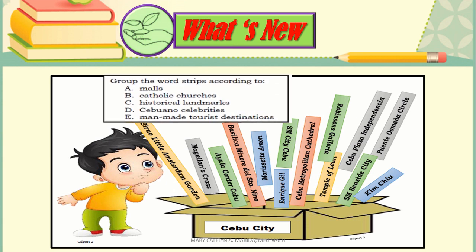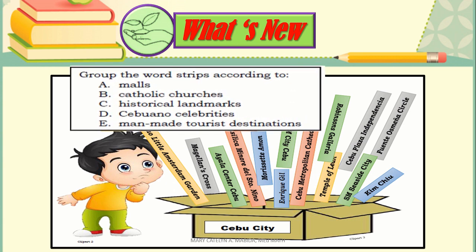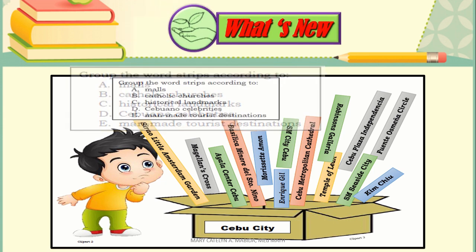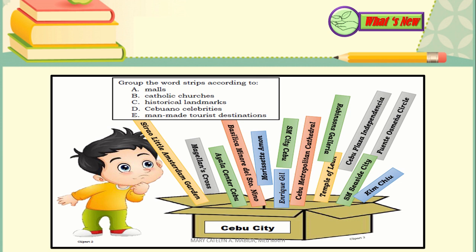What's new? Group the word strips according to: A. Malls, B. Catholic Churches, C. Historical Landmarks, D. Cebuano Celebrities, and E. Man-made Tourist Destinations. The word strips include: Sirau Little Amsterdam Garden, Magellan's Cross, Ayala Center Cebu, Basilica Minore del Santo Niño, Morissette Amon, Enrique Hill, SM City Cebu, Cebu Metropolitan Cathedral, Robinson's Galleria, Temple of Leia, Plaza Independencia, SM Seaside City, Fuente Osmeña Circle, and Kim Chu.